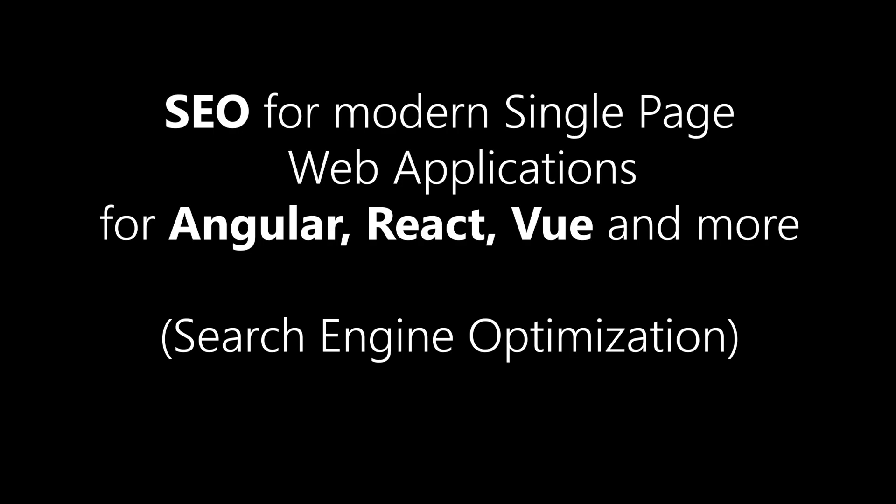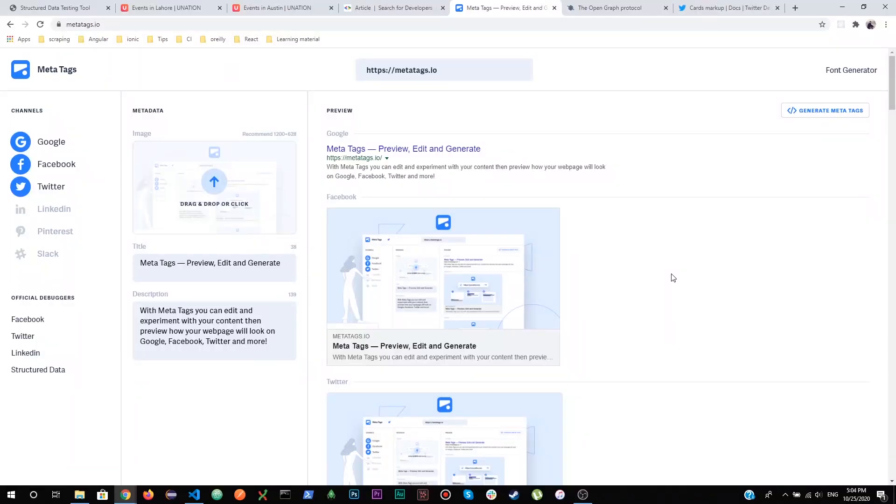In this video I'm going to be talking about how you can improve SEO of your single page modern web application. SEO means your website should be rendered and ranked on search engines like Google. Nowadays social media is also highly used for sharing content, so your content should be properly rendered there too. I'm going to cover three major things required to improve the SEO of your website.